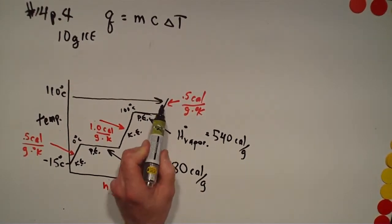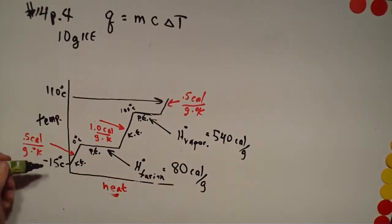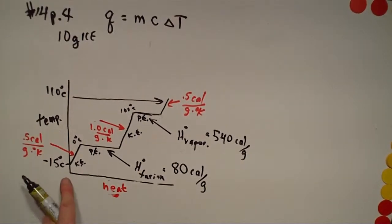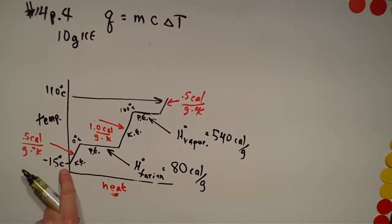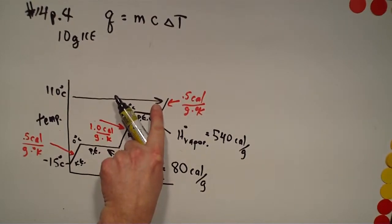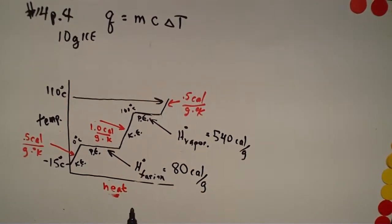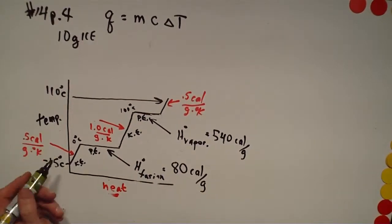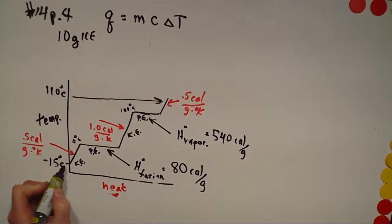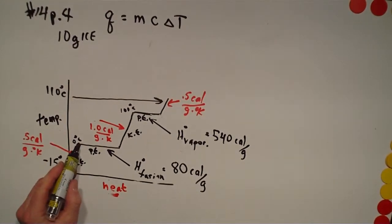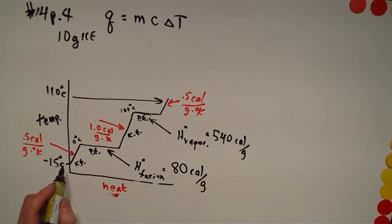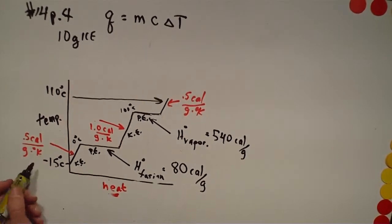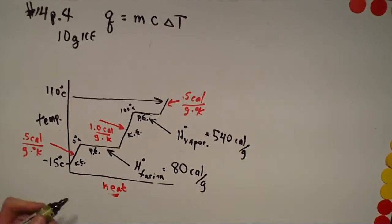At this point all the water is boiled off and it starts to rise again as the steam begins to heat up. This problem goes from negative 15°C all the way up to 110°C — from cold ice up to hot steam. All along the way there are various amounts of energy that have to go into the system. Per gram, from ice up to where it starts to melt, you have to add 0.5 calories per gram per degree.